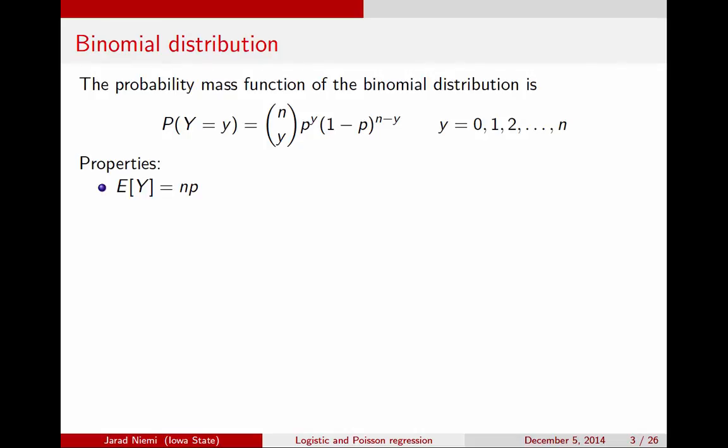So a couple of properties of the binomial distribution. The first is that the expectation is n times p. So if you have a probability of success of 0.5 when flipping a coin, you flip the coin 10 times, you would expect to observe 5 heads. The variance is n p times 1 minus p, and this describes the variability around that mean.